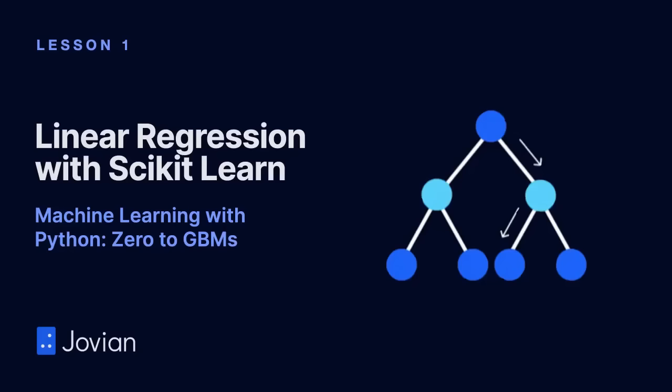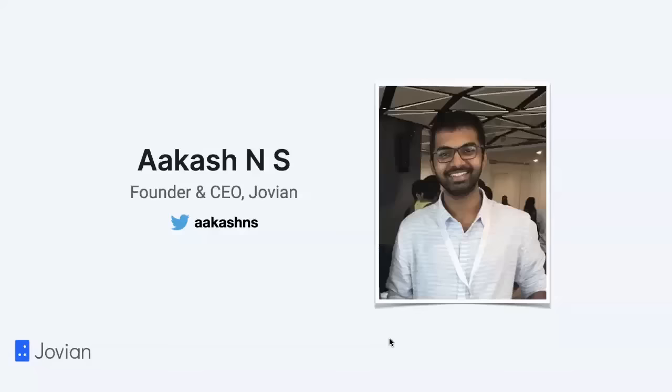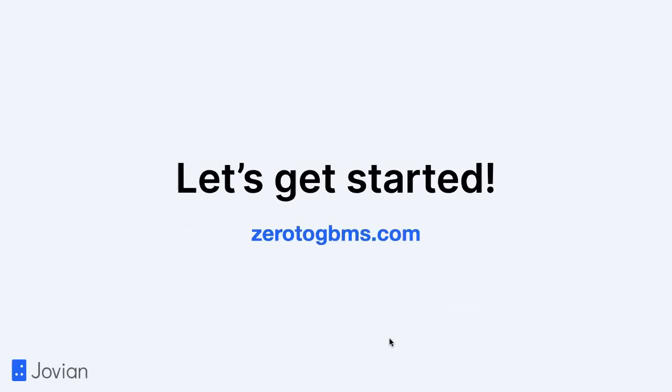Hello, and welcome to Machine Learning with Python: Zero to GBMs. This is a six-week practical online certification course brought to you by Jovian. Today we're on Lesson 1: Linear Regression with scikit-learn. My name is Akash. I'm the founder and CEO of Jovian, and you can find me on Twitter at Akash Enes. I will be your instructor during the course. So let's get started.